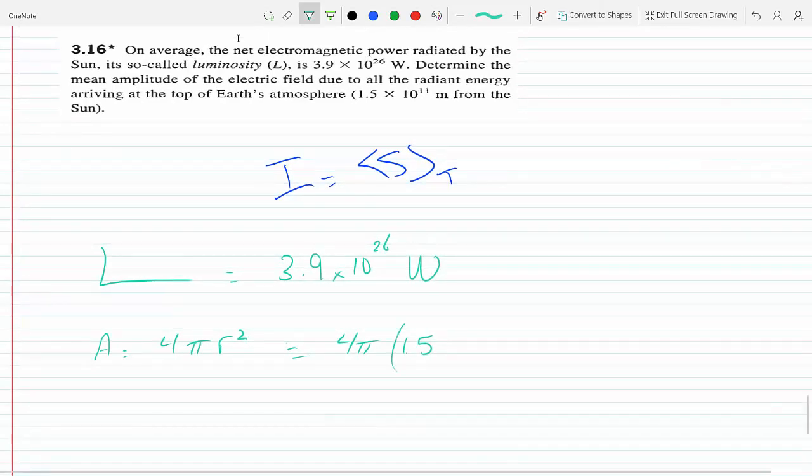1.5 times 10 to the 11 meters, so that would give us 2.8 times 10 to the 23 meters squared.